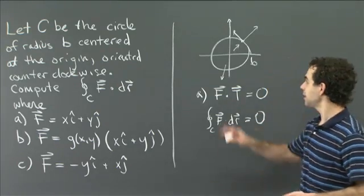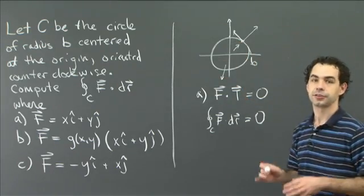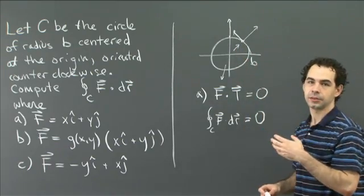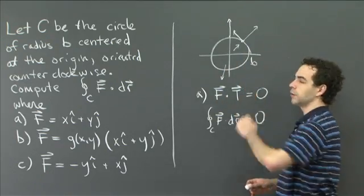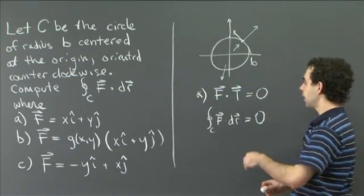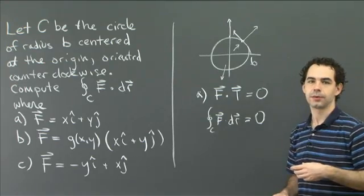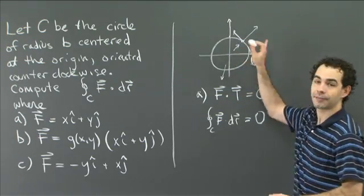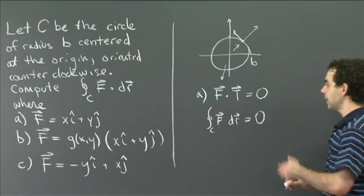So this is just 0 right away. We didn't have to parameterize the curve or anything. We just had to look at this picture to understand that this kind of field, what's called a radial vector field, where the vector f is always pointed directly outwards. When you integrate a radial vector field around a circle centered at the origin, you get 0, because the contribution at every point is 0. OK. So that's part a.